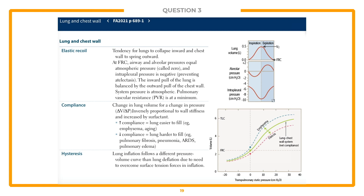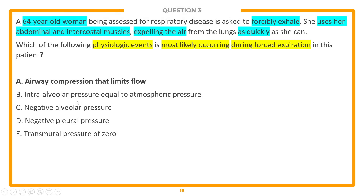During forced expiration, airway compression will limit airflow. This is important in patients with diseases like COPD, where traction of the airways is reduced and forcible expiration can easily collapse those airways. In normal patients, you may not have that much collapse, but in patients with bad airways, they can easily become collapsed if you try to forcibly exhale. So during normal respiration, intrapleural pressure is still negative, but during forcible expiration it can actually become positive — which is why answer choice A is the right answer.